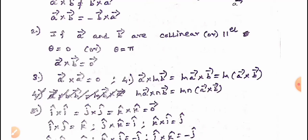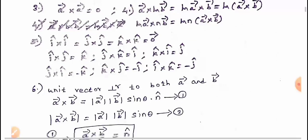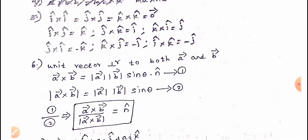Same vector cross product: A vector cross A vector equals zero vector. Fourth property — scalar rule: A vector cross M times B vector equals M times A vector cross B vector, and M into A vector cross B vector equals M times A vector cross B vector.